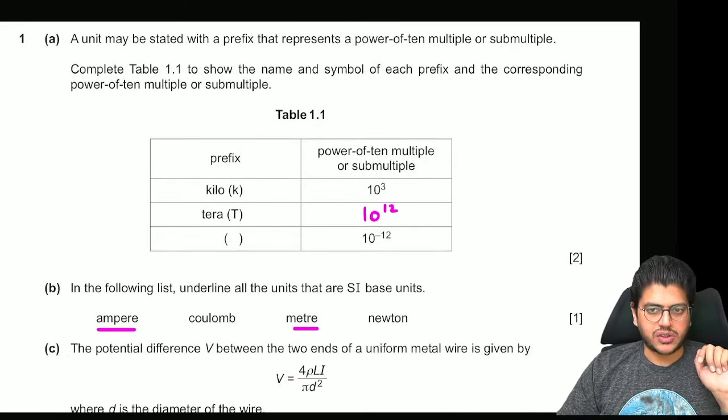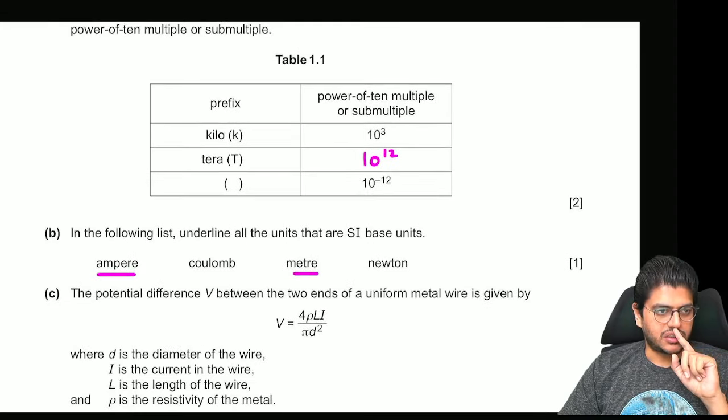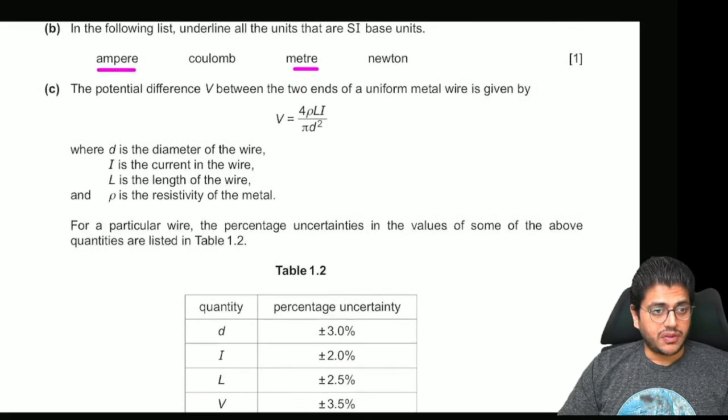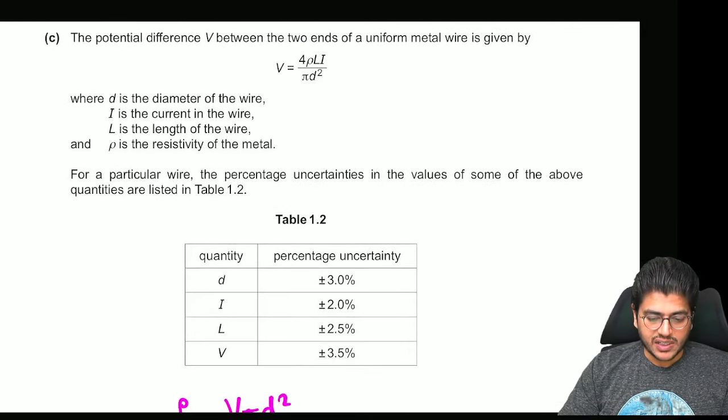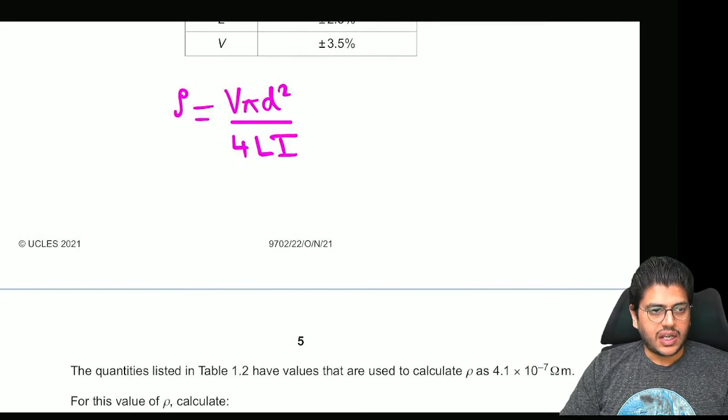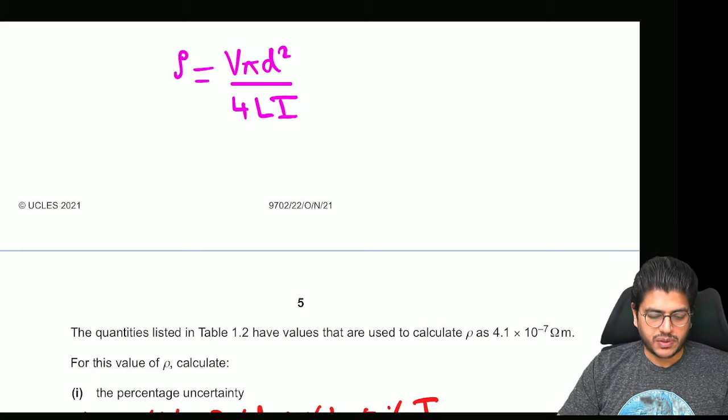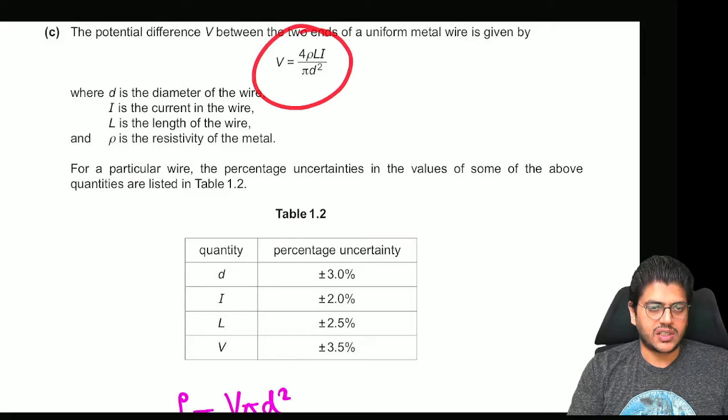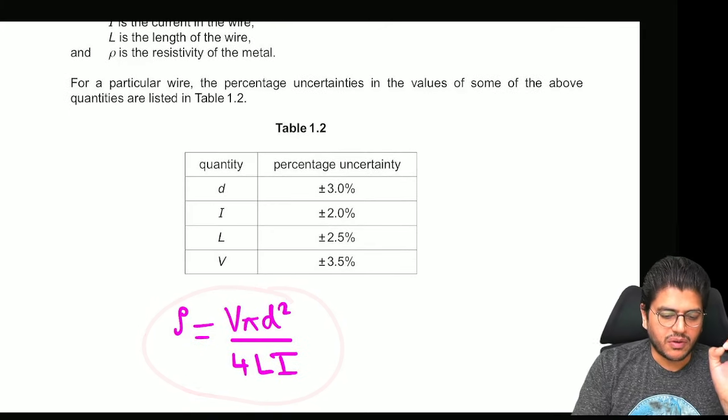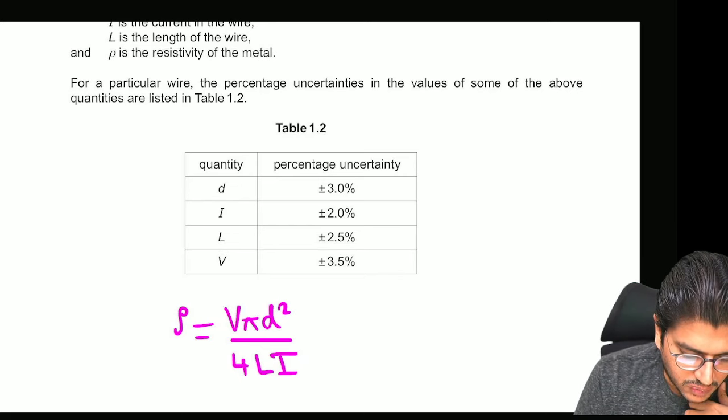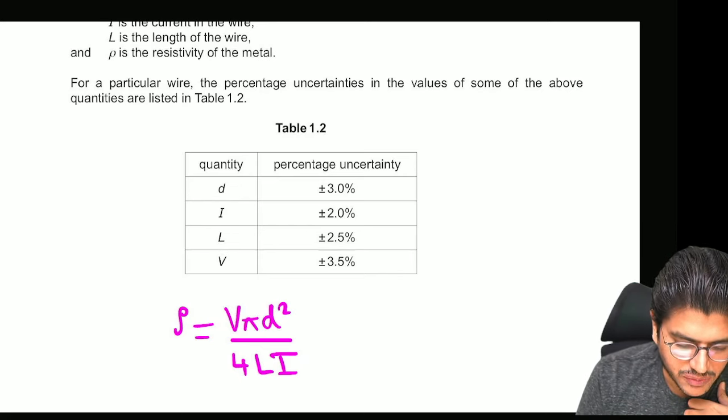The potential difference V between two ends of uniform metal wire is given by this expression. They've given you the quantities and their percentage uncertainties. They're asking you to figure out what is the percentage uncertainty in your density. So the first thing that you do from this equation is you make density the subject. Remember whatever quantity they ask you to find the percentage uncertainty in, the first thing is always to make that quantity the subject of the equation.